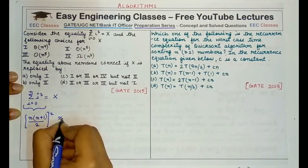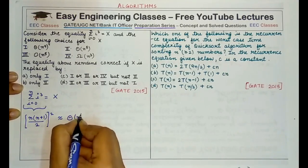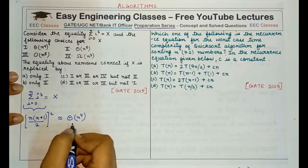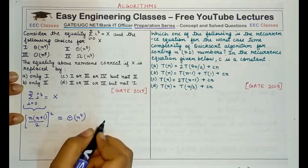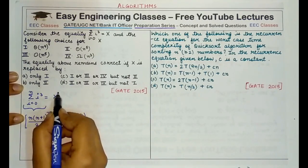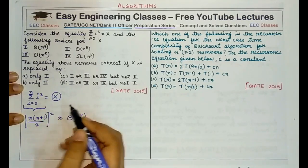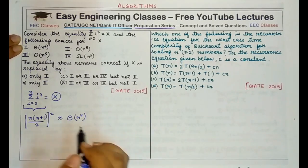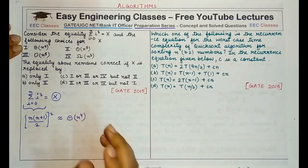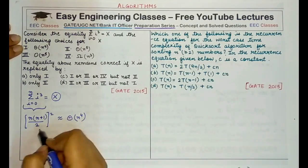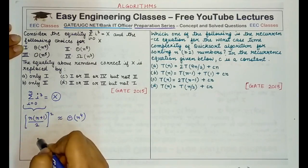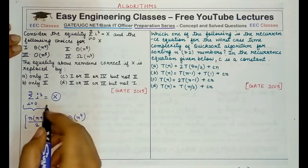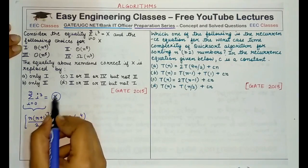This expression comes out to be theta of n raised to power 4, because the numerator is n squared and the denominator squared also gives n squared — so n squared multiplied by n squared gives a bound of theta of n⁴. Since this is the exact or tightest bound on the expression, the first option, theta of n⁴, is definitely a valid choice for replacing x.